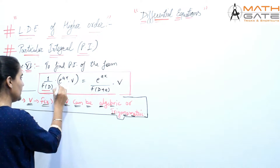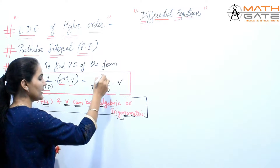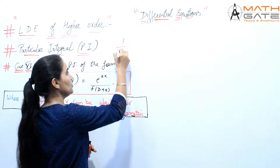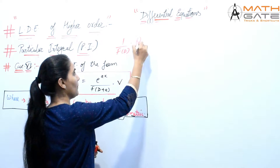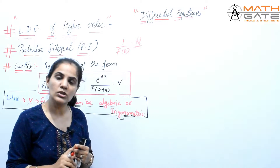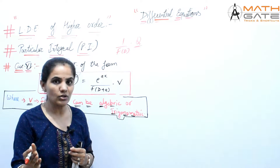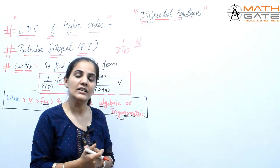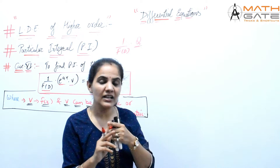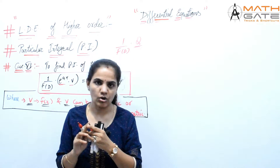So 1 by F(D) into Q — here Q is the function. Q can be e to the power ax, or Q can be sine(ax) or cos(ax), or Q can be x to the power m — means an algebraic function. So Q can be exponential, trigonometric like sine or cosine, or algebraic.